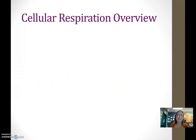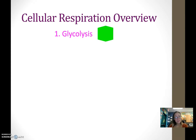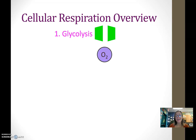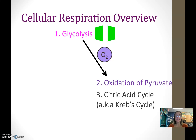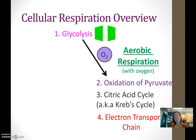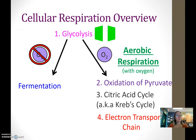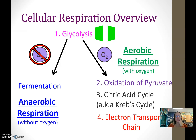Now let's look at an overview of cellular respiration. The first step that always happens, no matter what, is glycolysis — which literally means splitting sugars. If oxygen is present, glycolysis is followed by the oxidation of pyruvate in the mitochondria, the citric acid cycle, and the electron transport chain. This is aerobic respiration, meaning with oxygen. If there isn't any oxygen available, anaerobic respiration follows, which is fermentation — either lactic acid or alcoholic fermentation.